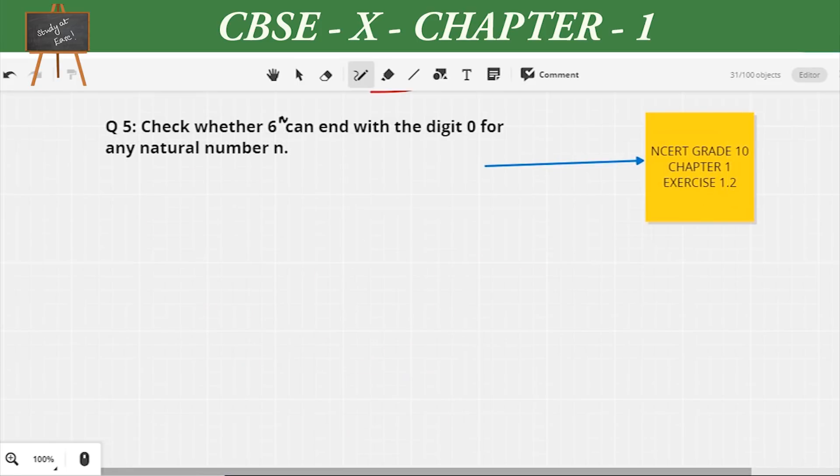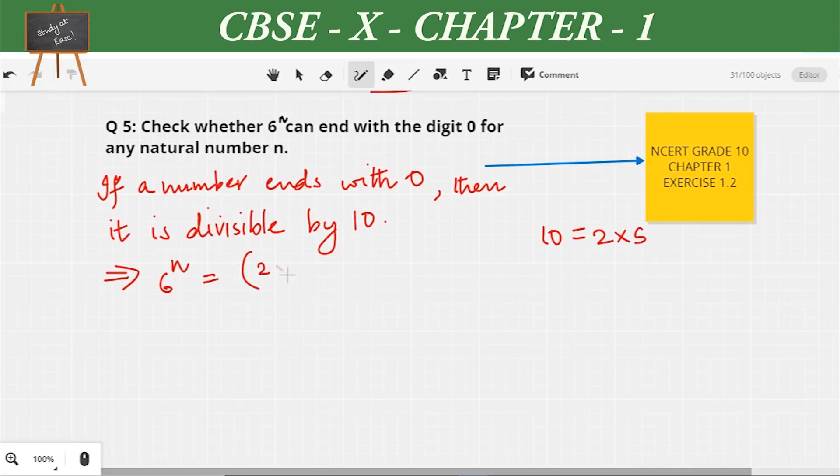Check whether 6^n can end with a digit 0 for any natural number n. Now if a number ends with 0, then that means the number is divisible by 10. 10 = 2 × 5. Now let's see what are the factors in 6^n. 6^n = (2 × 3)^n. We find a 2 but we don't have a 5, that means 6^n is not divisible by 5.